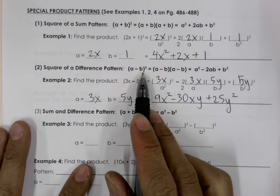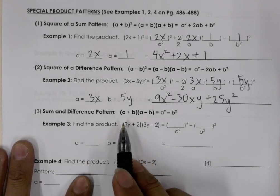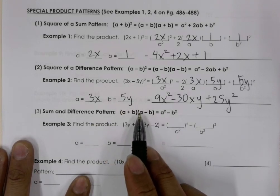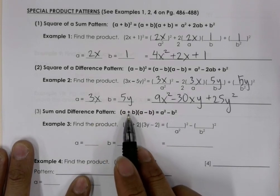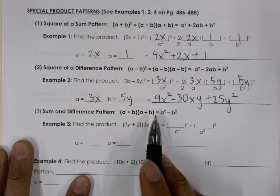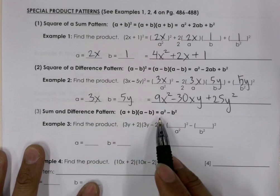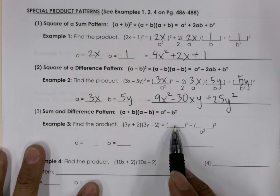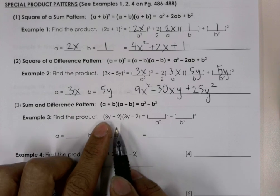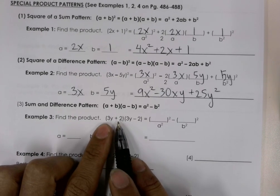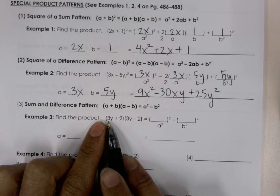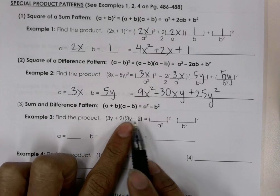And in this case we have a sum times the difference. So we have (a + b) times (a - b). And this is like the most useful of the patterns because it's simply a² - b². So if we look at this problem, we can see this is what we have: (a + b) times (a - b). So our a is 3y and our b is going to be 2.